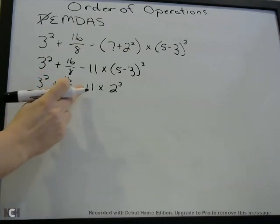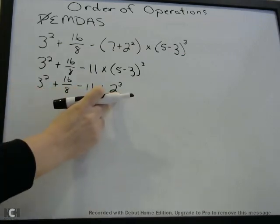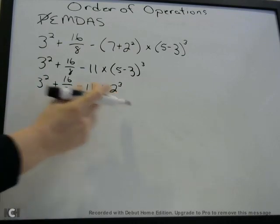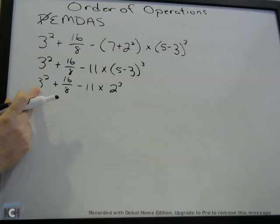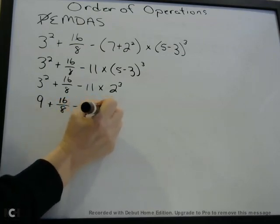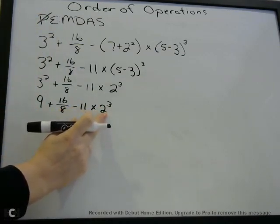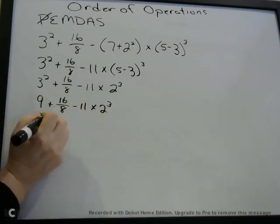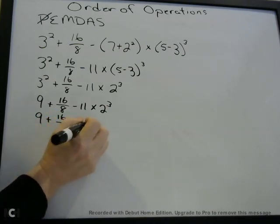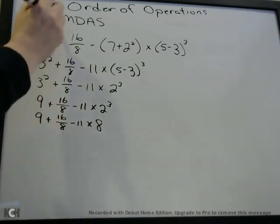Now we're left with this expression: 3 squared plus 16 divided by 8 minus 11 times 2 cubed. So now we move to the next item — the E, exponents. Well, we have 2 exponents: we have 3 squared and we have 2 cubed. We just start at the left. So 3 squared: 3 times 3 is 9. So I write down 9 plus 16 divided by 8 minus 11 times 2 cubed. We still have an exponent, so we're still on E. 2 cubed: 2 times 2 times 2 is 8. So I replace that: 9 plus 16 divided by 8 minus 11 times 8. Now we don't have any more exponents — we're done with E.